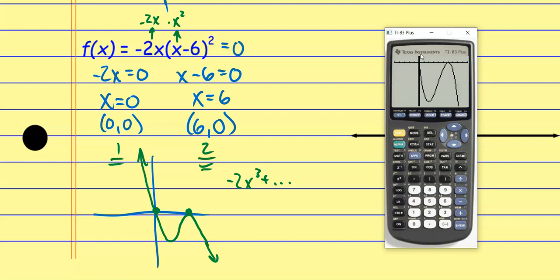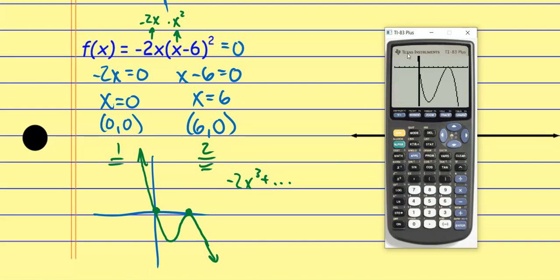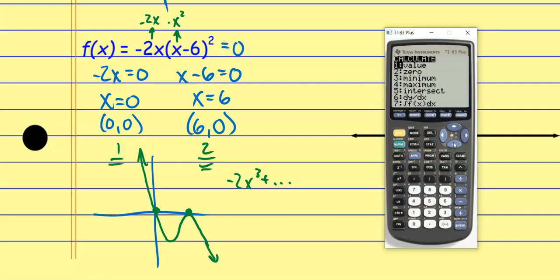Maybe this gets a little lost around that (0, 0) area. I could go back to the Window and change the Y maximum to maybe 20, just to give a better idea — now we can start to see that little piece up here. We already have that in our quick sketch. I already have my y-intercept and both x-intercepts from the factored form. The only thing I need to find is this relative minimum that's down here; the relative maximum is already my x-intercept at (6, 0). So Second, Calculate, down to Minimum, left bound, right bound, guess.